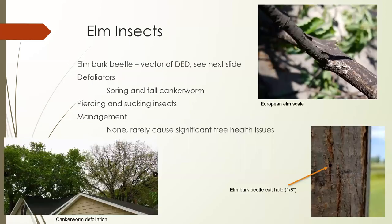American elm is our state tree and it has a lot of problems. Elm bark beetle is especially a problem because it vectors Dutch elm disease. Also spring and fall cankerworm love American elm — sometimes people put sticky stuff on their trees because one of the cankerworms doesn't like to crawl through it. But those insects will climb up some other tree unless you put sticky stuff around all the trees in your neighborhood or windbreak.